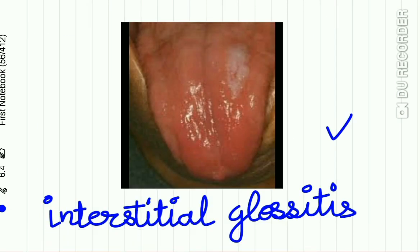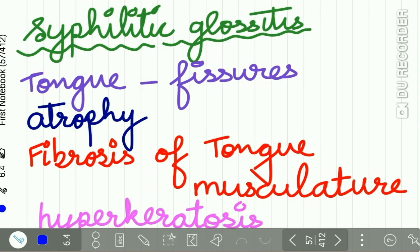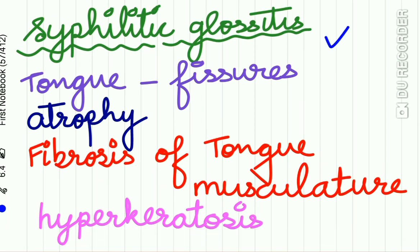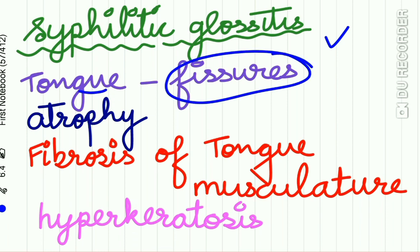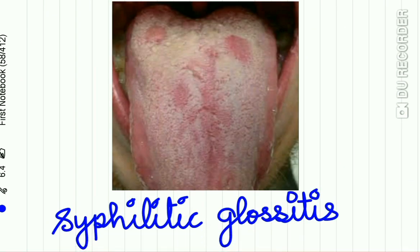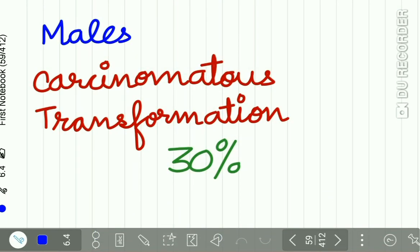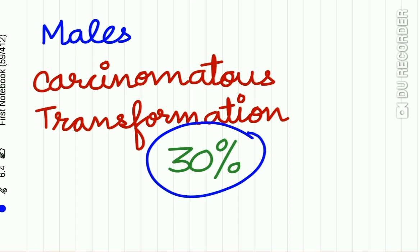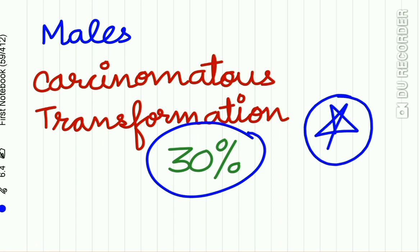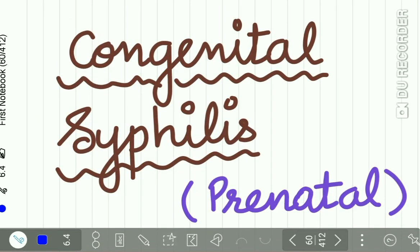Syphilitic glossitis may occur on the tongue, with fissuring, atrophy, fibrosis of the tongue musculature, and hyperkeratosis. Importantly, in males this syphilitic glossitis has a 30% chance of undergoing malignant transformation — an important point to remember.